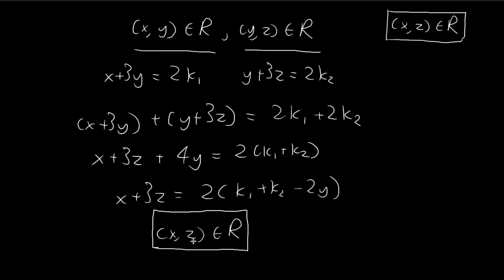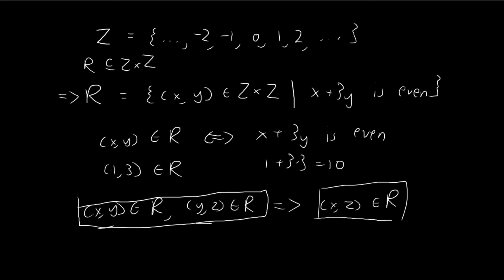And so this concludes our proof that R is a transitive relation, because we've just proven that if x is related to y and y is related to z, then this immediately implies that x is related to z. This is an example of how we can construct a transitive relation.